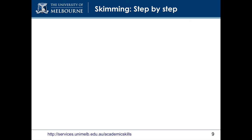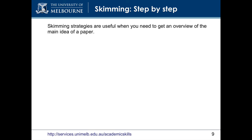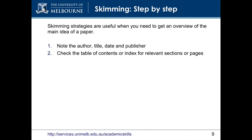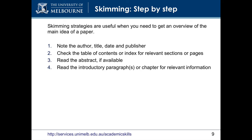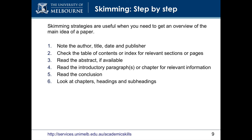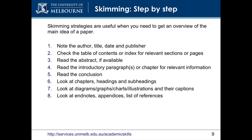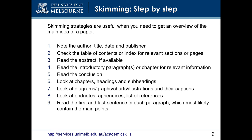Skimming strategies are useful when you need to get an overview of the main idea of a paper. They involve reading any information that will give you an overview, including the author, title, date and publisher; table of contents or index for relevant sections or pages; the abstract; introductory paragraphs or chapters; the conclusion; chapter headings and subheadings; diagrams, graphs, charts, illustrations and their captions; end notes, appendices and lists of references; and the first and last sentence in each paragraph, which most likely contain the main points.